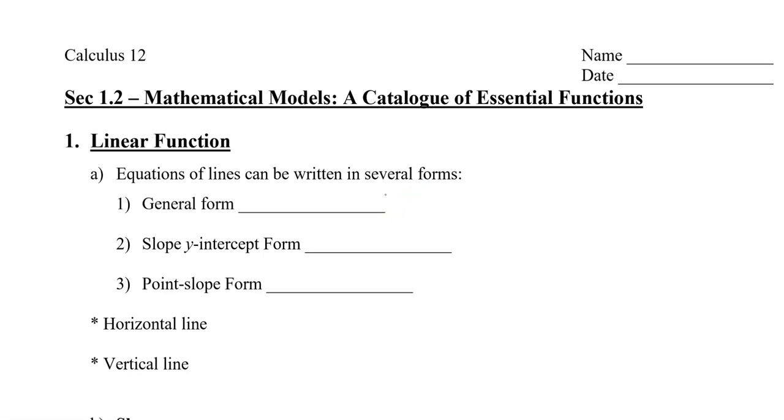Recall that equations of lines can be written in several forms. The first form is called general form, and this is usually written as Ax + By + C = 0, where A, B, and C are real numbers.